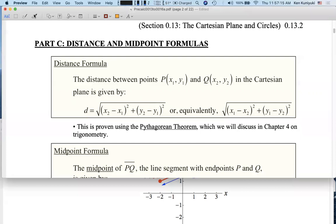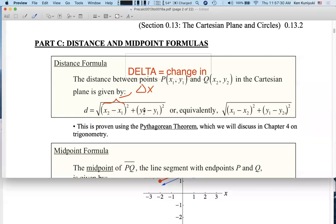We often denote the difference in x-coordinates by Δx. The triangle, capital delta, means 'change in.' Likewise, y₂ minus y₁ can be thought of as Δy, the change in y.